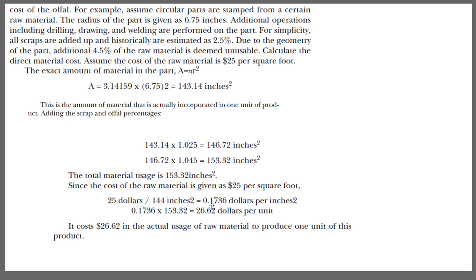So that will give around 0.1736 per square inch. If you multiply that quantity by the total area required that is the actual material cost required to produce this product. So this is how you estimate the cost associated with the material for a particular product.